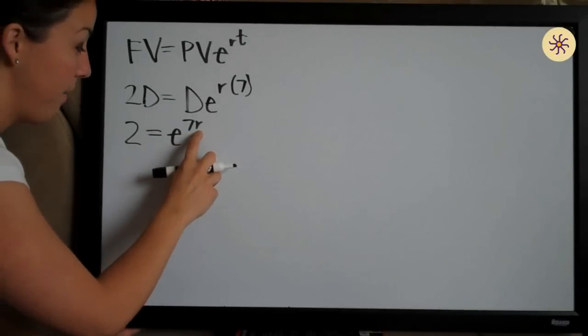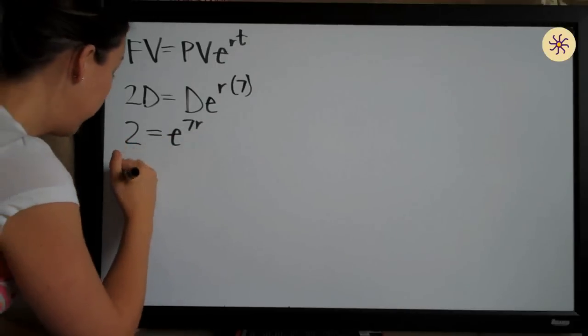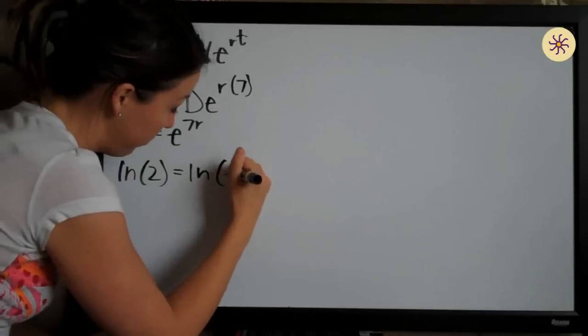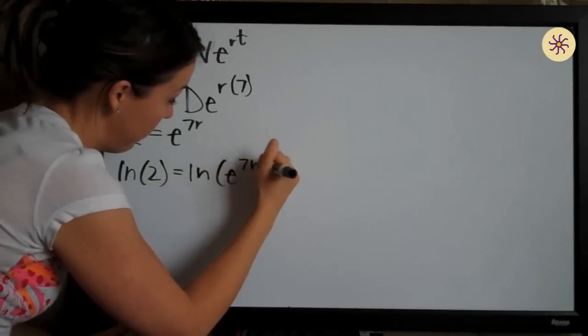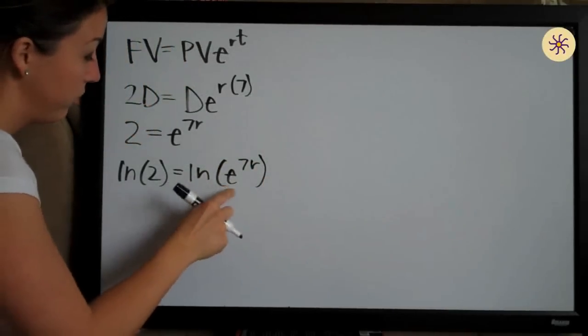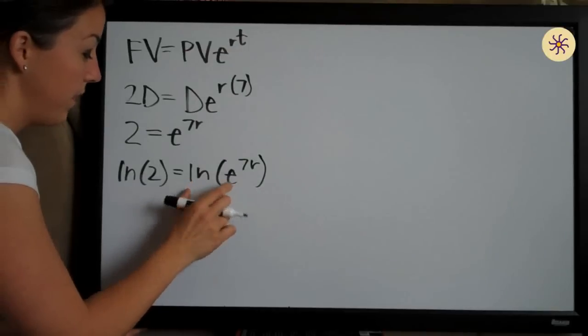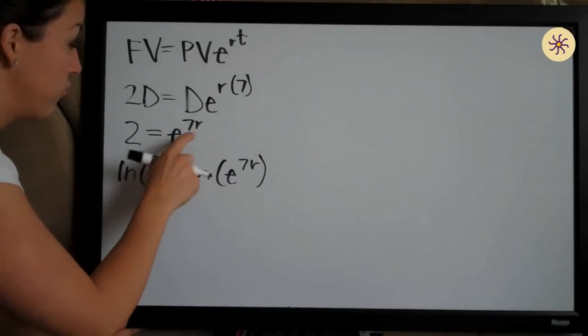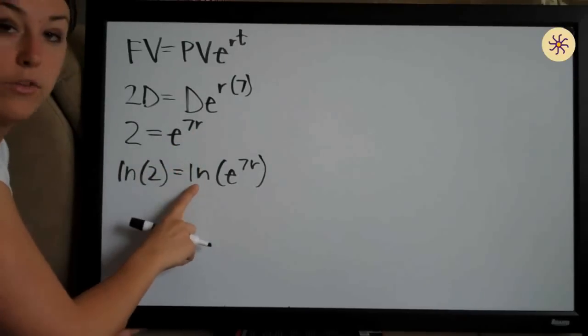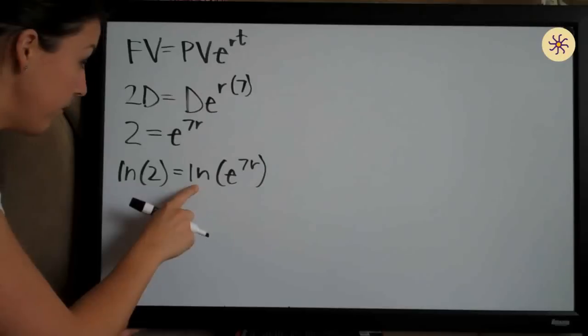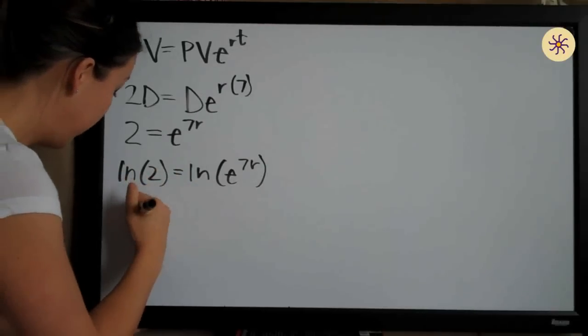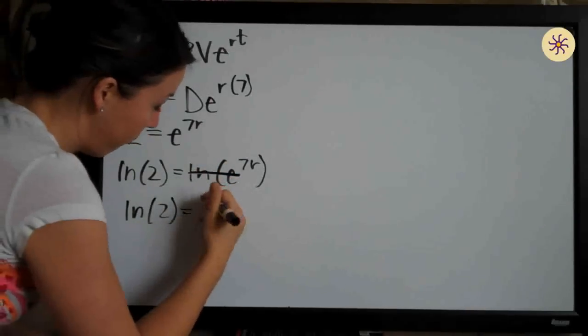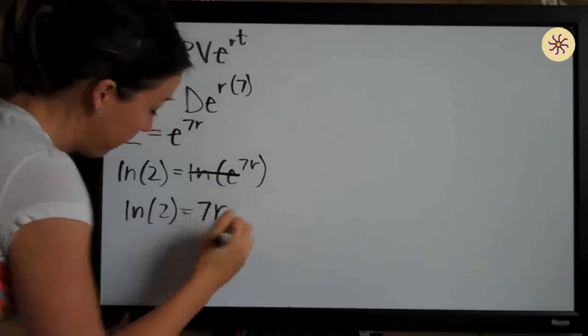We're going to take the natural log (ln) of both sides because when we do that, we'll cancel out the natural log and the E. E and natural log always cancel each other out, so when you're trying to get something out of the exponent on E, that's always what you do. So now we have ln(2) over here. These will cancel and we'll be left with 7R on this side.